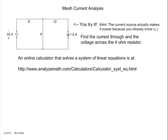Well, now it's your turn. Here's an interesting looking circuit. This one has a 15 volt battery, 6 ohm resistor, 12 ohm resistor, 4 ohm resistor, and a constant current source. Now this looks more difficult than the last one, but it actually makes things easier. Because if you call this current I1 and this current I2, you already know that I2 is 1.5 amps. If you need an online calculator to solve your system of equations, here's a hyperlink to one. You can go there. And pause the video now, try to work it out, and then finish playing the video to see what the correct answers are.